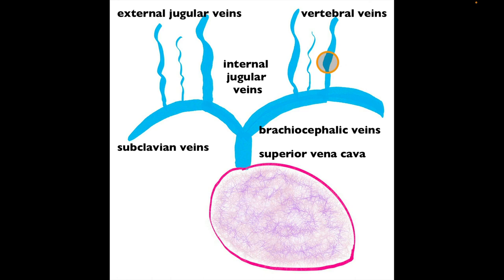The external jugular veins drain blood from the exterior region of the skull, face, and middle of the brain. Most of the blood from the brain is drained via the internal jugular veins.